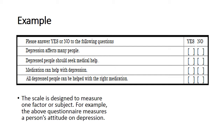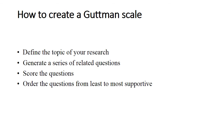Here is an example showing the first step of constructing a Guttman scale. This is a Guttman scale on depression, with four items shown. In a standardized test, the scoring details would be fully provided, but this illustrates the first step. The researcher writes down the statements, and there are two response options: yes and no.